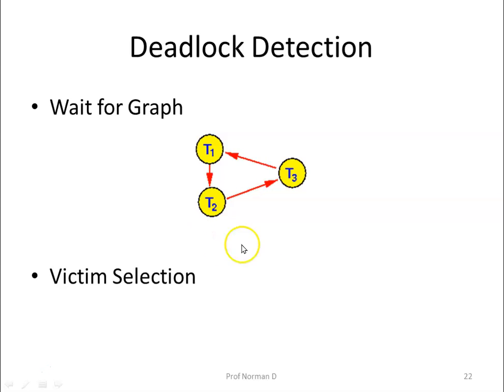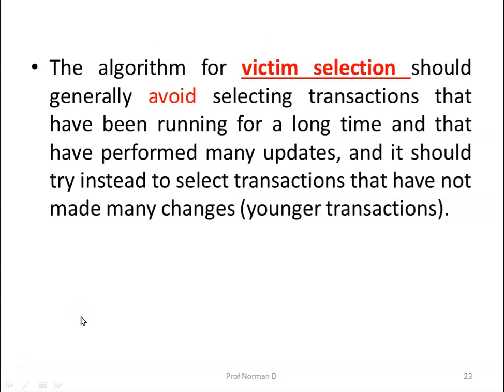Choosing which transaction to abort is called victim selection. The algorithm for victim selection should generally avoid selecting transactions that have been running for a long time and have performed many updates; instead it should select transactions that have not made many changes — basically a transaction with a higher timestamp, i.e., a younger transaction. The concept of deadlock detection, avoidance, and prevention is the same as what you have studied in operating systems.